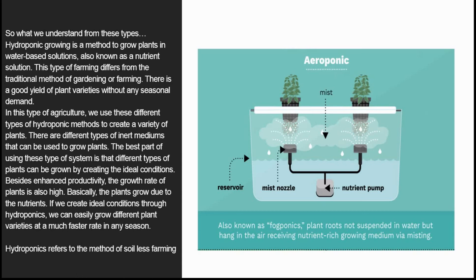It is riddled with many false beliefs common in the growing community. Hydroponic growing is a method to grow plants in water-based nutrient solutions. This type of farming differs from the traditional method of gardening or farming. There is a good yield of plant varieties without any seasonal demand. In this type of agriculture, we use different types of hydroponic methods to create a variety of plants. There are different types of inert mediums that can be used to grow plants, and different plant types can be grown by creating ideal conditions.